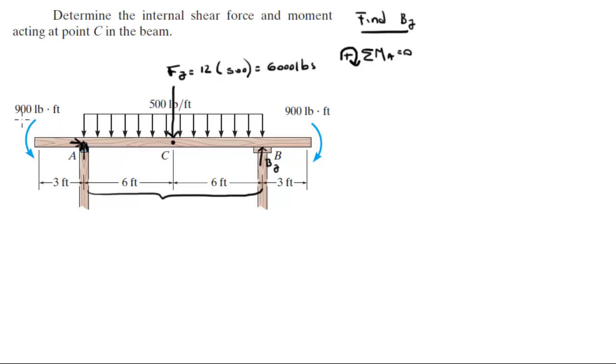So we have this 900 and this 900, one going clockwise, one going counterclockwise. So plus 900 minus 900 cancels each other out. Now we got the moment created by this distributed load, which has an equivalent force of FY. So it's plus FY because it creates a clockwise moment about A times the distance from FY to A, which is 6 feet.